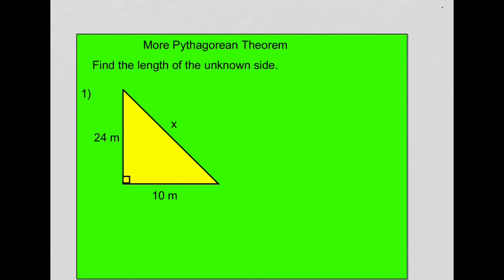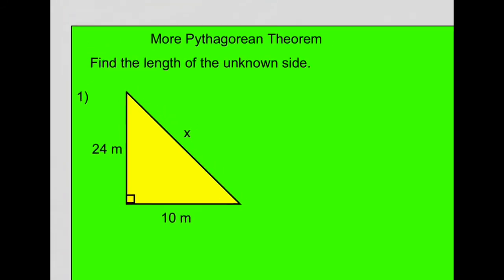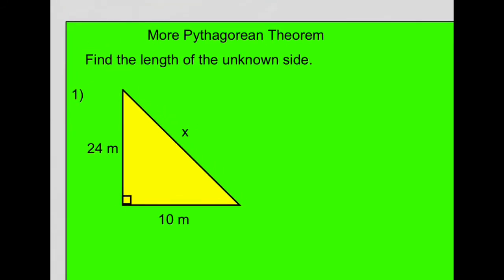The first one I'm going to do is where we have a missing hypotenuse. Now, before you do any math, you want to study this right triangle, and you want to find the legs and find the hypotenuse. Now, remember, the hypotenuse is always the side opposite the right angle. So in this particular question, you can tell the right angle, it's where that little square is.